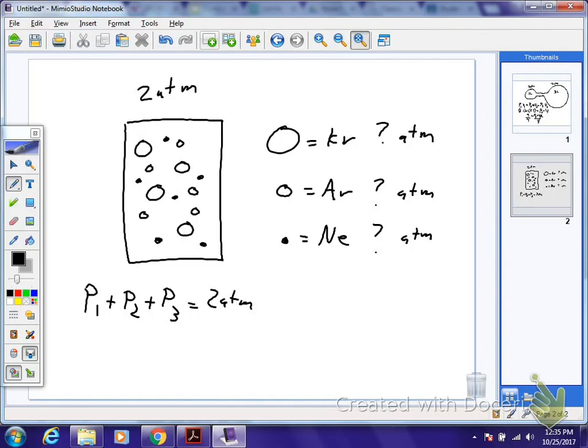There's like four krypton atoms. Okay, so you've got four out of 15. What about argon? Five out of 15. So one out of three. And then this one? Six out of 15.